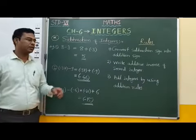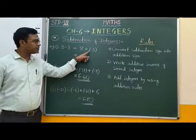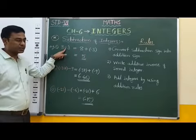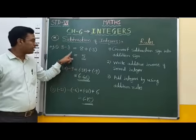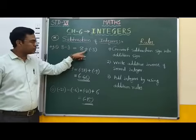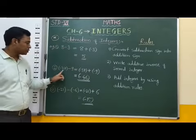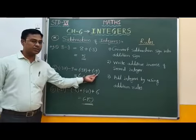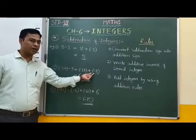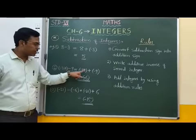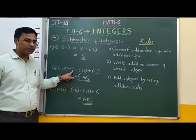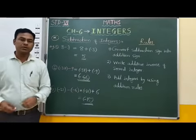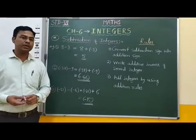Students, note that 8 minus 3 and 8 plus minus 3 are both equal — we only convert the subtraction sign into addition sign. Similarly, minus 37 minus 9 and minus 37 plus minus 9 are both equal — we convert the subtraction sign into addition sign and write the additive inverse of the second integer. I hope this is understood. Thank you.